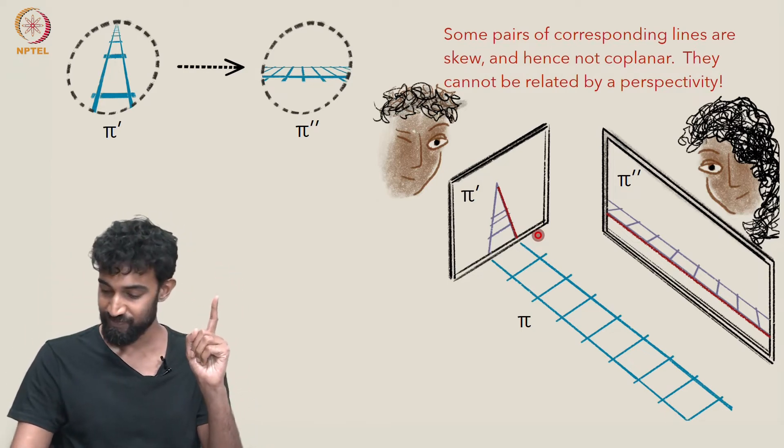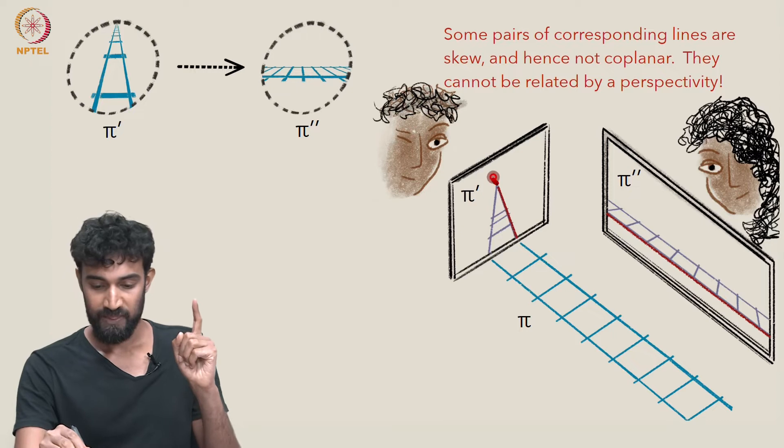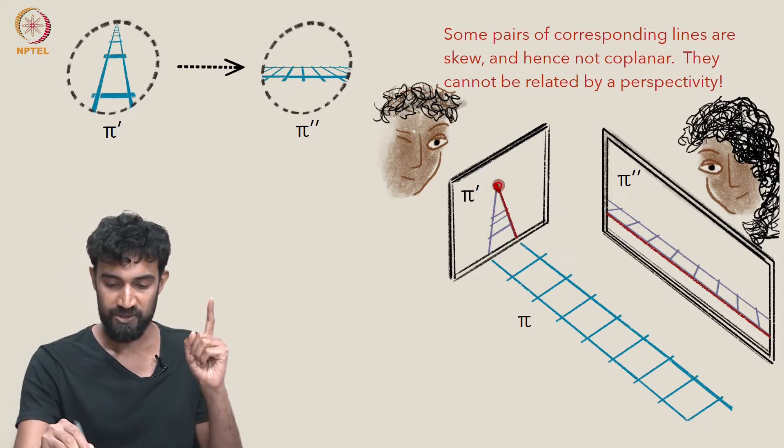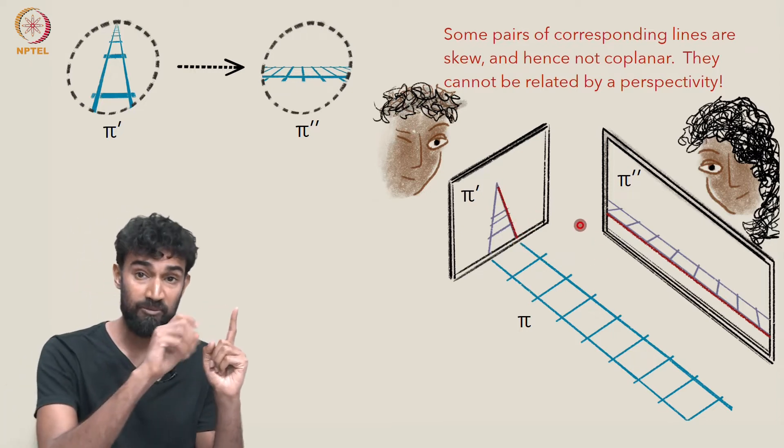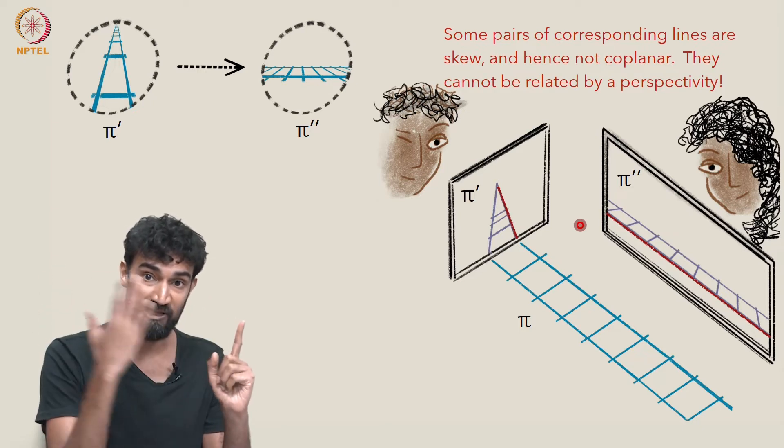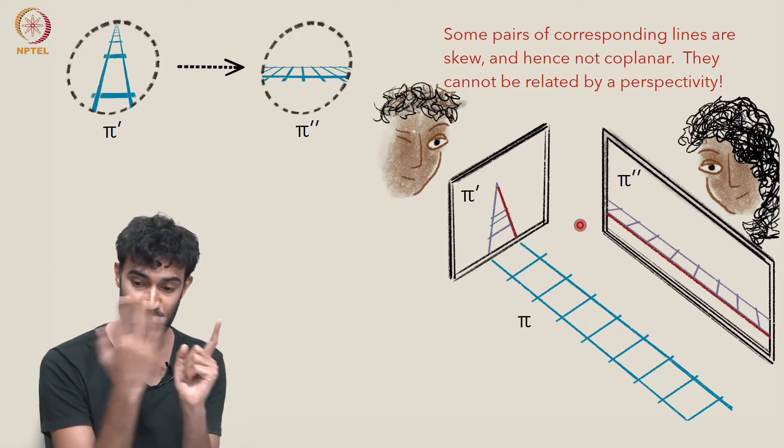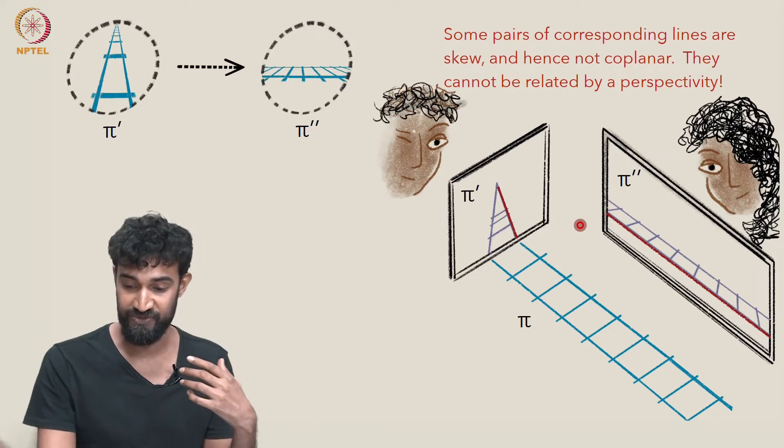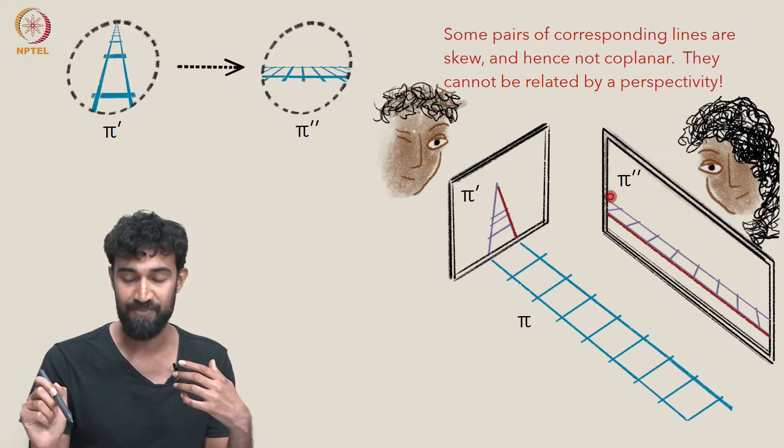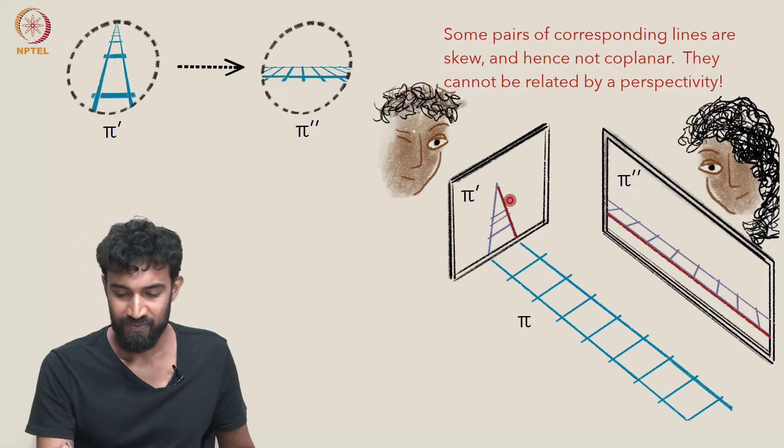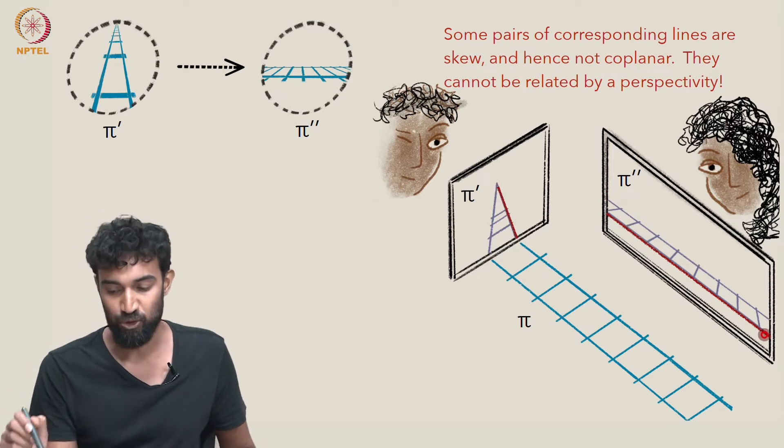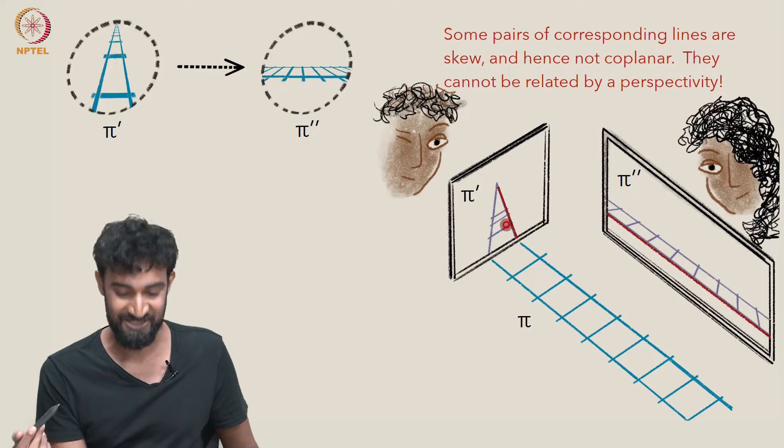The line here and the point O together are going to form a plane in space. They're going to span out a plane. And the image of that line is going to lie somewhere in that plane, wherever the plane hits this image plane, π″.